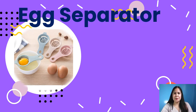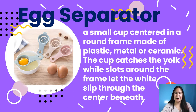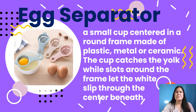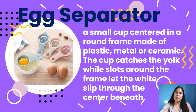Another tool is an egg separator — from the word itself, we are separating the yolk from the egg whites. It is a small cup centered in a round frame made of plastic, metal, or ceramic. The cup catches the yolk while slots around the frame let the whites slip through. An egg separator is a tool used to separate the yolk of an egg from the egg white. Those without a device can simply crack the egg into clean hands, fingers slightly apart, allowing the egg white to slide through while the yolk remains.